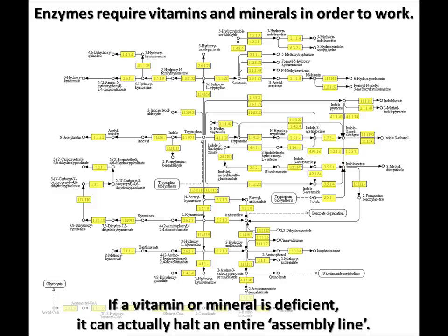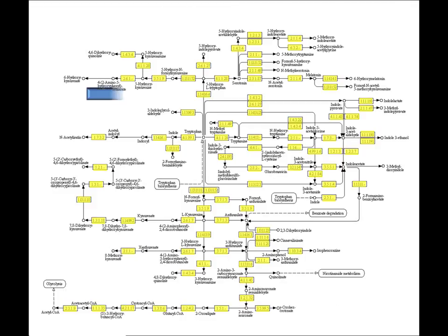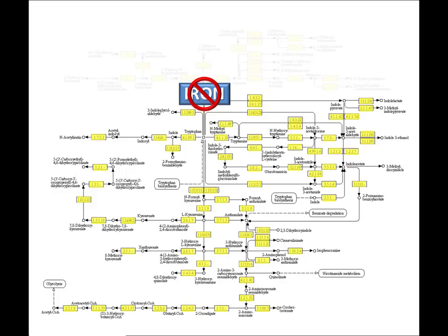We'll give you an example to illustrate. This particular enzyme requires iron in order to function. So if iron is deficient, a whole network of metabolic processes would be affected. This is a bad situation. By halting the assembly line at this point, among many other things, two important neurotransmitters — serotonin and melatonin — are no longer produced.